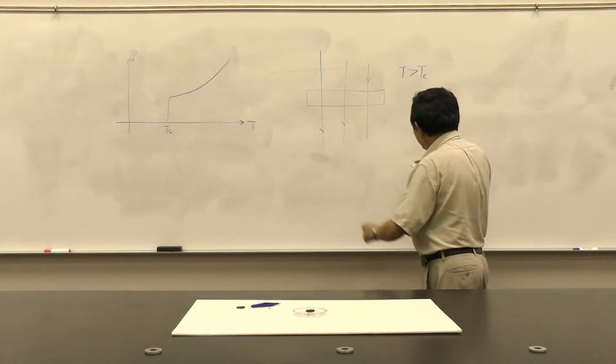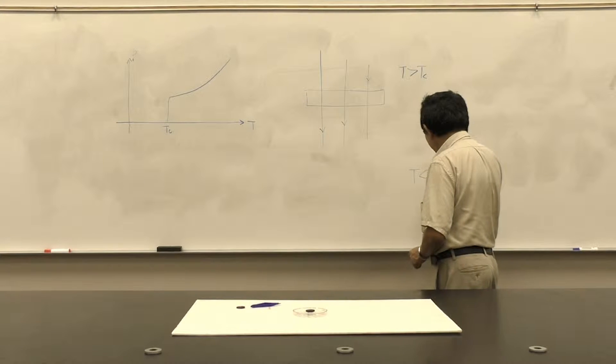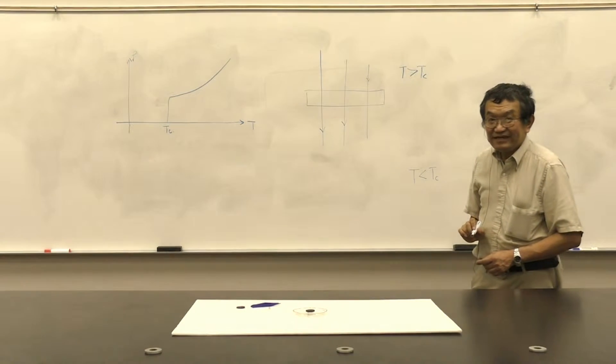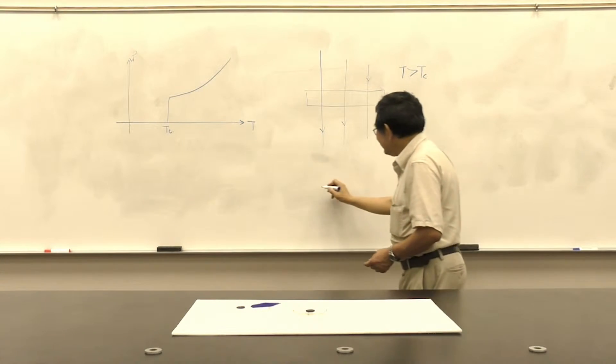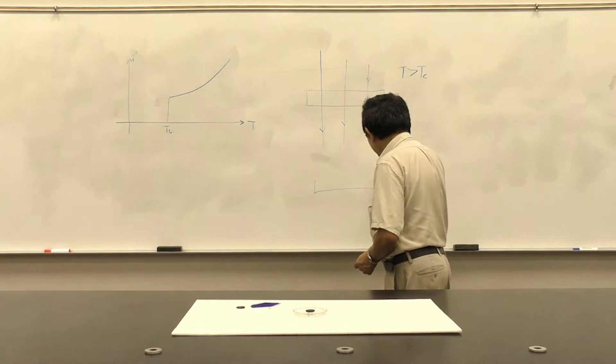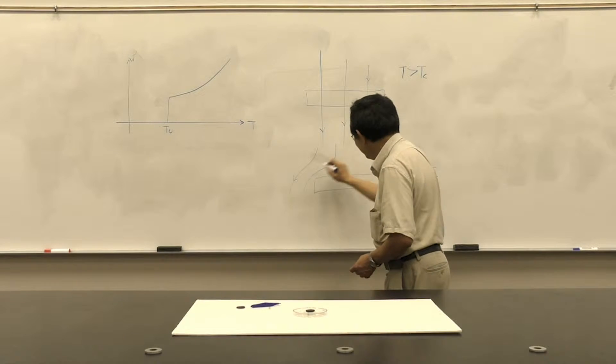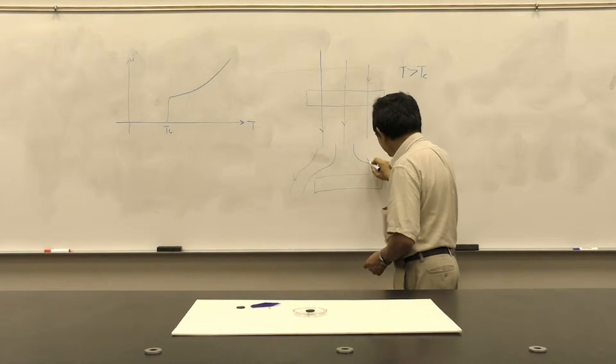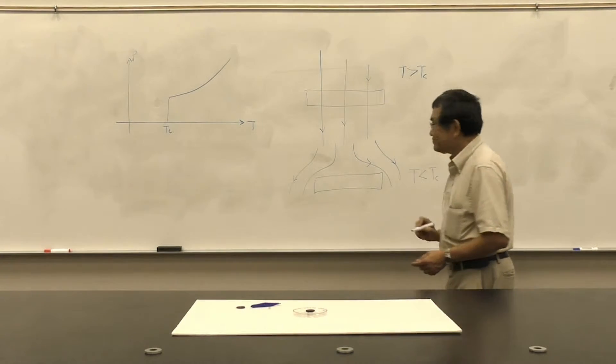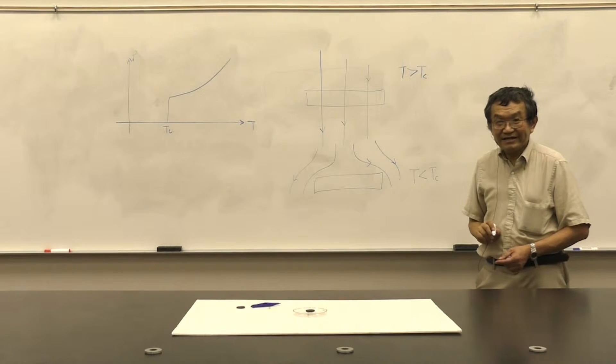And as you cool down the material to a temperature below Tc, it will become superconducting. And when it becomes superconducting, it will start to expel all the B-field away from the material, like a perfect diamagnetic material.